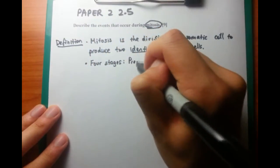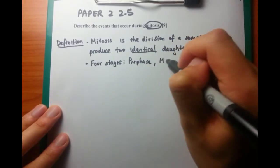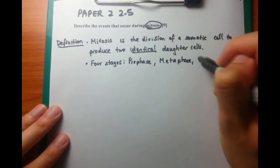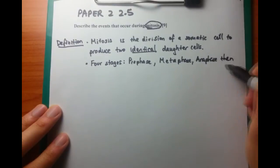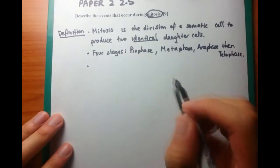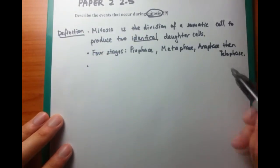First of all, prophase. Second of all, metaphase. Third of all, anaphase. And then finally, telophase. Now, prophase and telophase, or the P and the T, are actually opposites of each other. And now let's talk about prophase first.